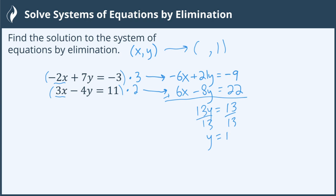But in order to find x, I need to take y and plug it back into either one of the original equations. It does not matter which. I'm going to choose the first one. Negative 2x plus 7 times y, which I just found is 1, equals negative 3. So let's solve this for x now.